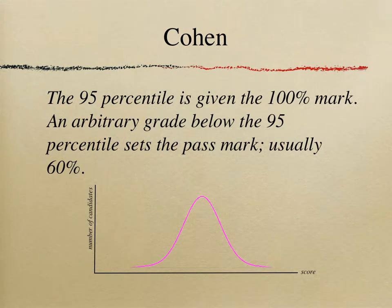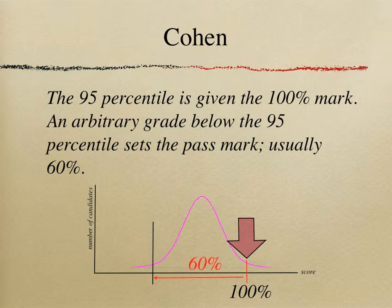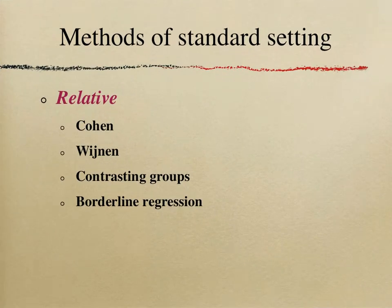Cohen is probably one of the simplest and cheapest of the relative methods. The way it works is: if you have a normalized distribution curve, you pick the 95th percentile, and whoever that candidate is, you give them 100% — and anyone above also gets 100%. Cohen then suggested you take an arbitrary number — she picked 60% of that person's score — and go down the curve, and wherever that cutoff point is becomes your pass mark. So Cohen is very simple and very cheap to do.